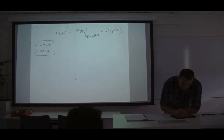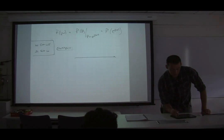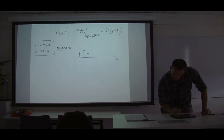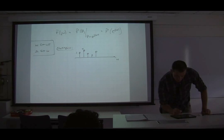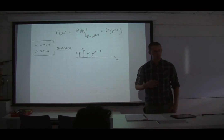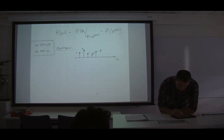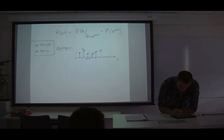Let's do an example — this is trivial, but I want to reinforce that there's no magic. Maybe we have a sequence: 1, 2, 1, 0.5, 1.5. It's important to know where we are in time, so say n equals 0 is at the first value, and the indices go minus 2, minus 1, 0, 1, 2.